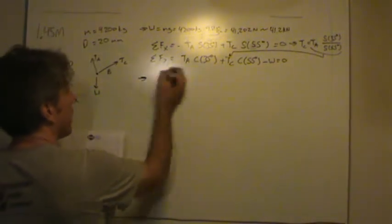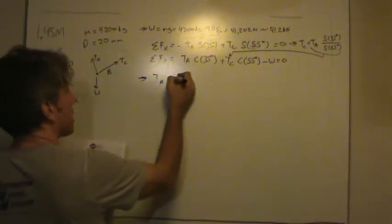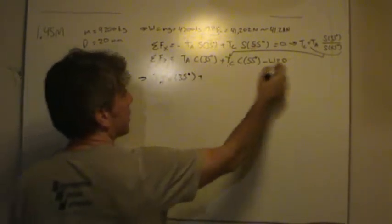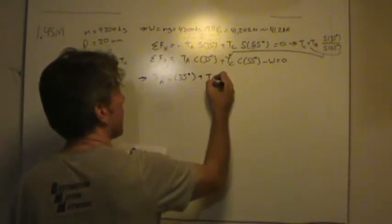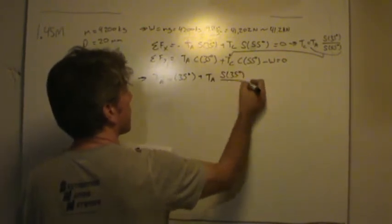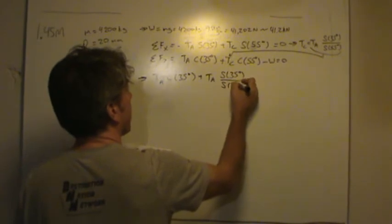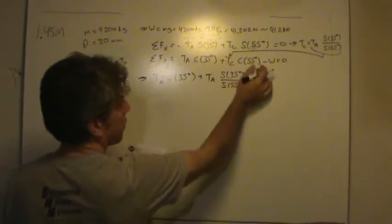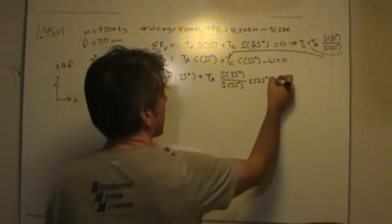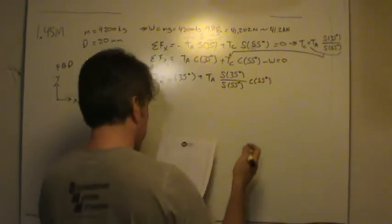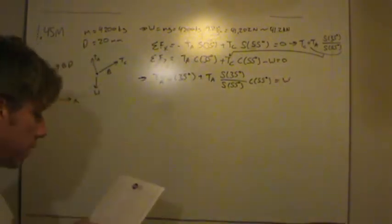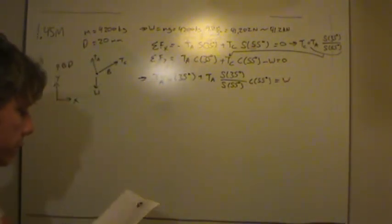Basically, I'll just take this and plug it in right there for TC, and write again, TA cosine 35 degrees plus TC, which is TA sine 35 degrees over sine 55 degrees, don't forget that we have this piece, multiplied by cosine 55 degrees, and then I just said equals the weight.